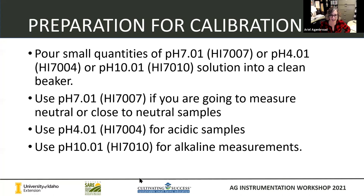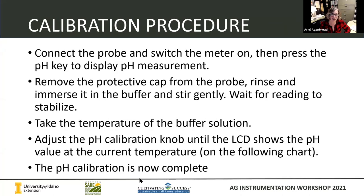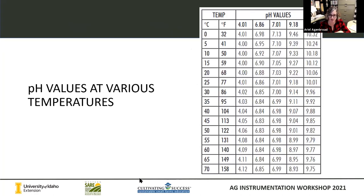Basically, just pour a little bit of this solution into a clean beaker, connect the probe, put the meter on, and put it in that buffer solution. You might wait maybe up to ten minutes just for that reading to stabilize and for your temperature to kind of regulate. It's also a really good idea to take the temperature of the buffer solution, because to be really accurate, pH is going to change slightly based on the temperature of the solution. You'll adjust your pH calibration knob until the screen shows the pH value at the correct current temperature, and then your calibration will be complete.